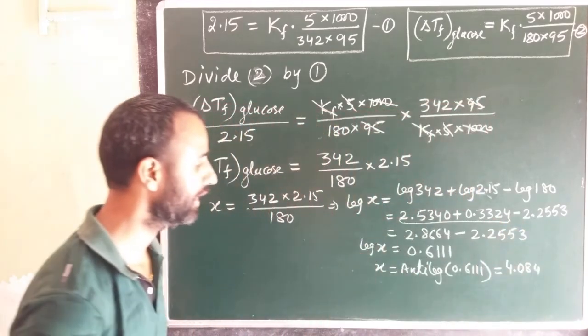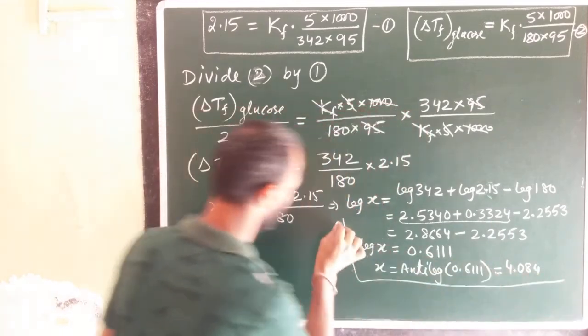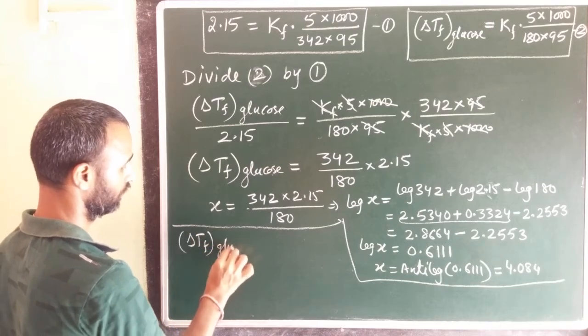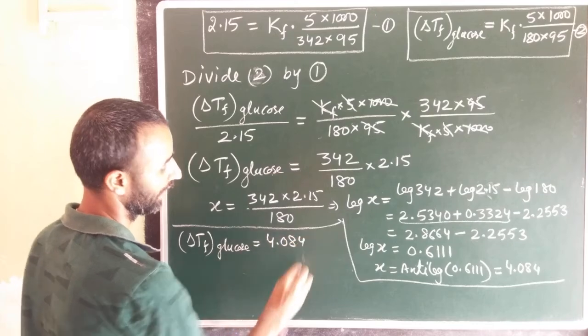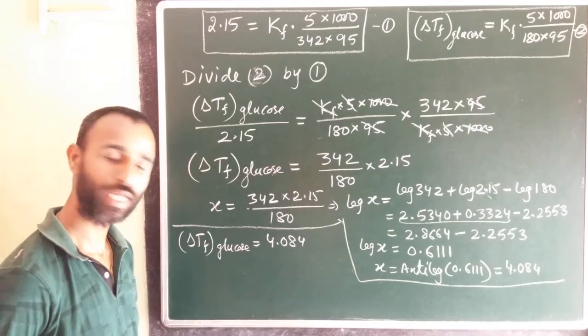This is delta Tf of glucose. So here we get delta Tf of glucose as 4.084 by using log and antilog table.